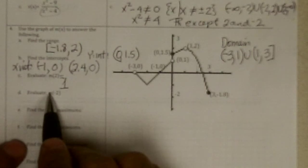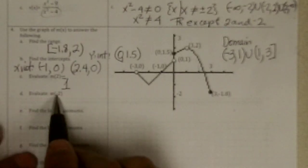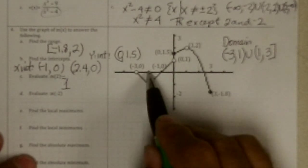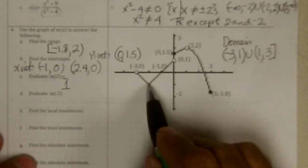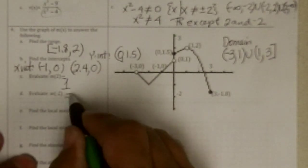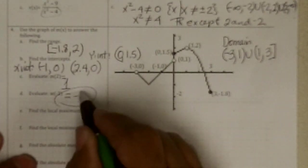What's the y value when x is negative 2? So I go to negative 2. And the y value is negative 1. That's all I have to write.